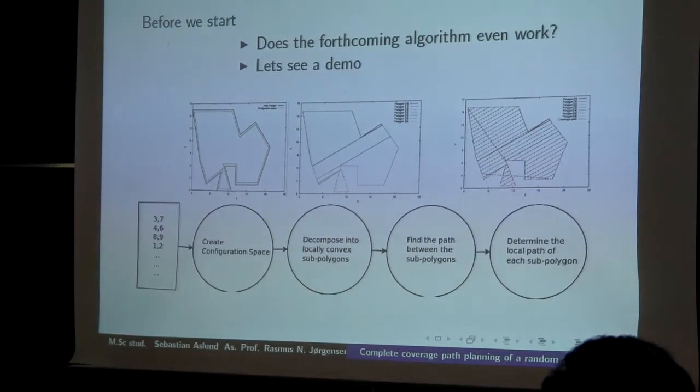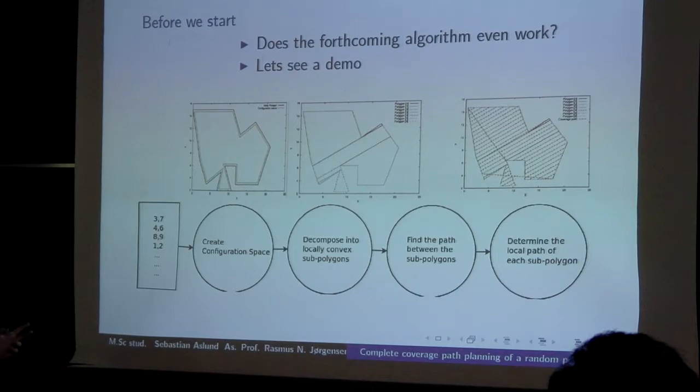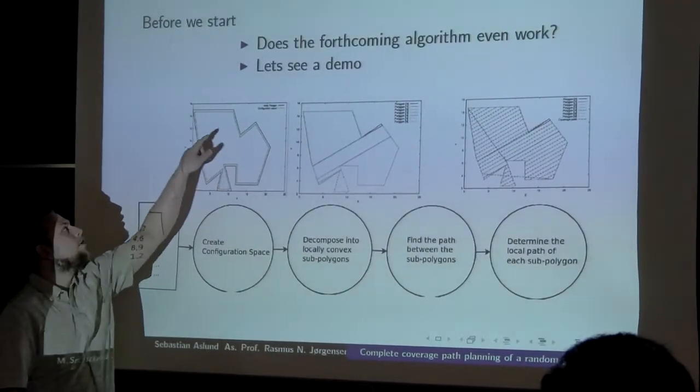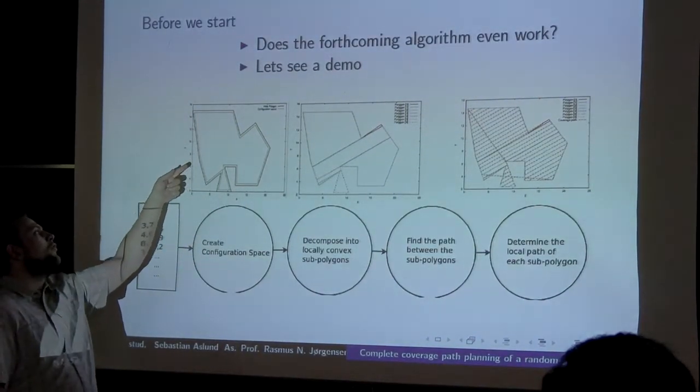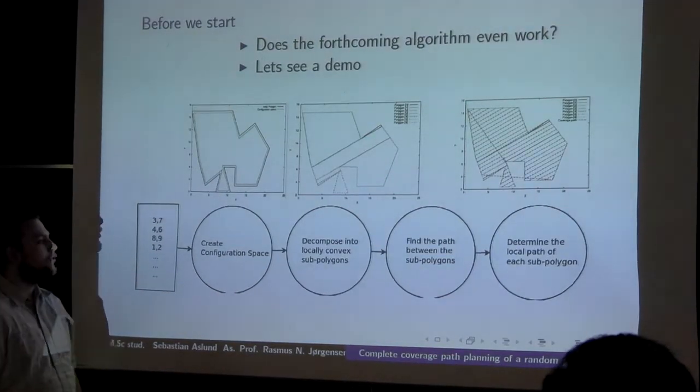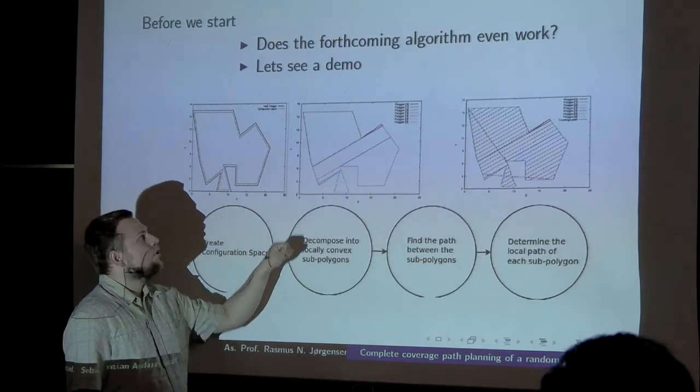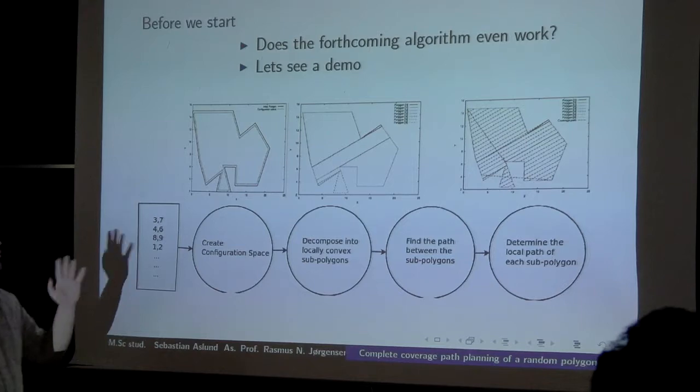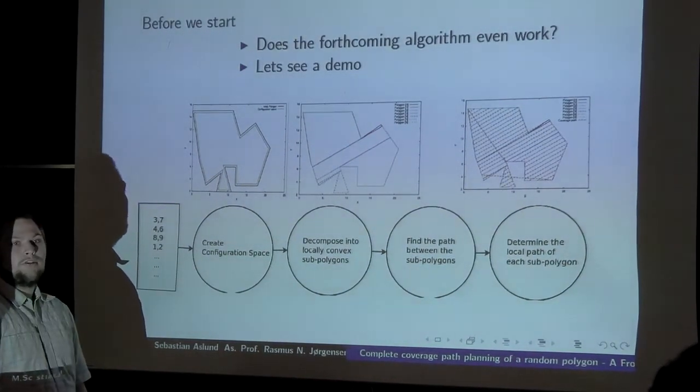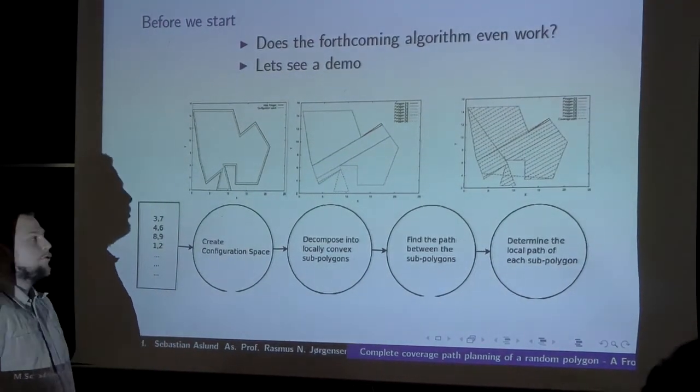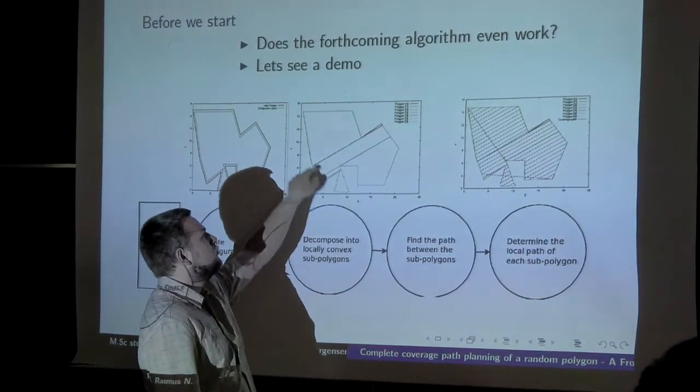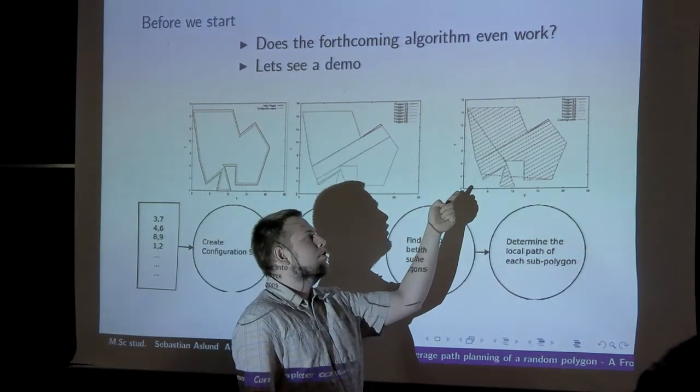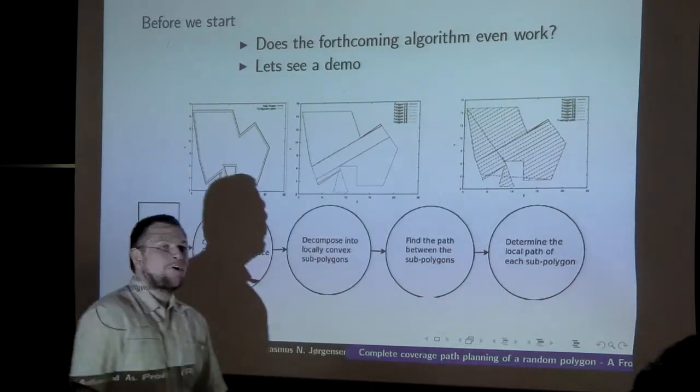Instead of just talking for 10 to 15 minutes without presenting anything, I'll just show you a short demo of my algorithm. Before that, I'll just give you a short introduction to the algorithm. We have these points here, and these points are represented on this red line here. Then we create the configuration space which is this green line right here. Then we subdivide this into local convex sub-regions which we have seen here, a lot of regions. We are assuming that the user is giving a fixed input. We can calculate the path of how to move between them and then cover each point area. You will see a better picture later of what was wrong about this sub-region.